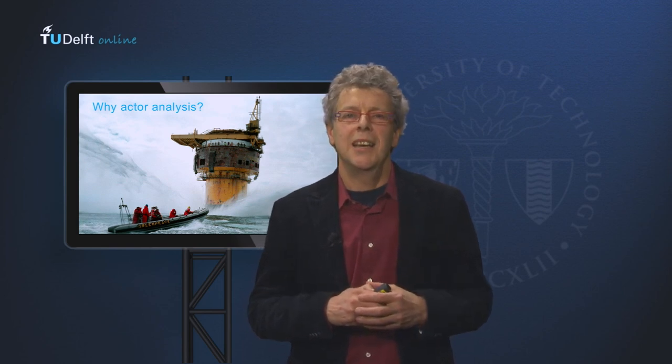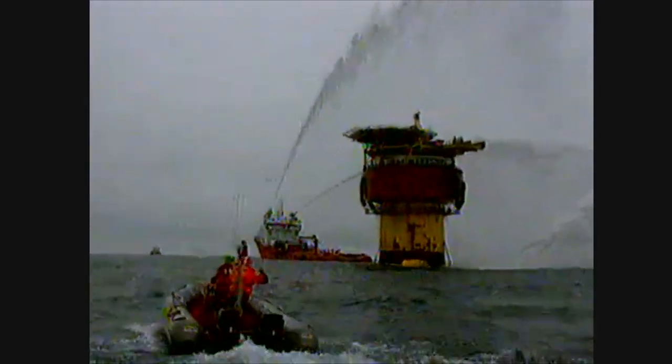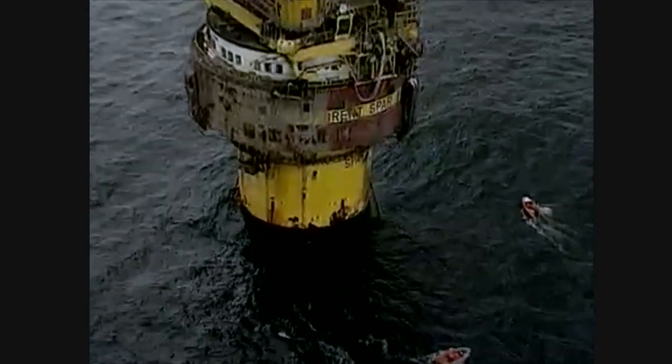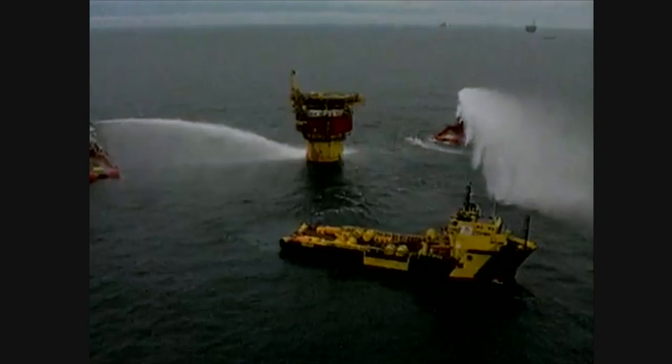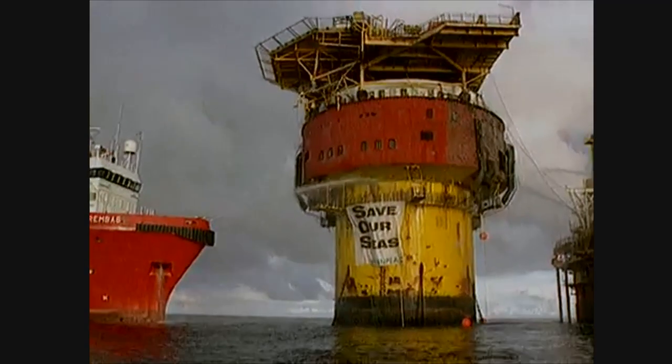Watch this one minute video and you'll see what happened. It's in Dutch, but the images tell the message. The video shows the 1995 Greenpeace action against Shell's attempt to dump the decommissioned oil platform Brent Spar at sea. Due to the Greenpeace action, Shell came under great pressure from public opinion. A prolonged occupation of the Brent Spar at sea by Greenpeace followed. This ultimately caused Shell to decide not to dump the platform but to dismantle and recycle it, preventing other decommissioned oil platforms from being dumped at sea as well.